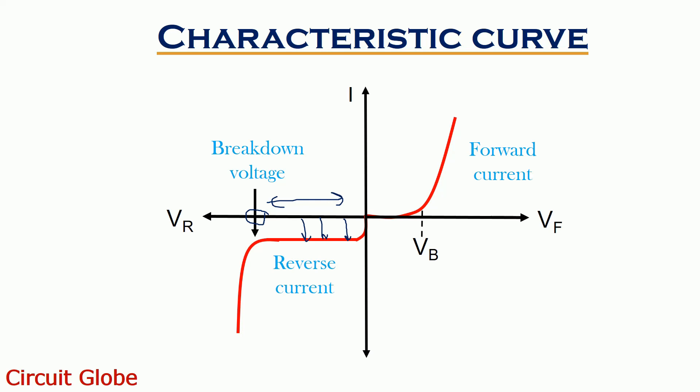However, if this reverse bias voltage is increased further beyond a certain range, it will lead to destruction of the device completely. So, with this discussion we can say that a diode exhibits non-linear characteristics.